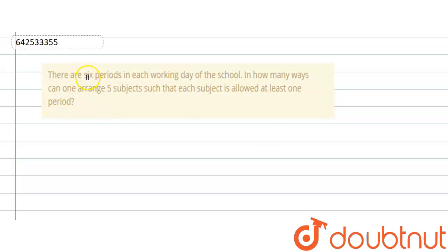So what we have given here: there are six periods in each working day of school, and we have to find how many ways we can arrange five subjects such that each subject is allowed at least one period. So what we have given - we have given six periods in each working day and five subjects.